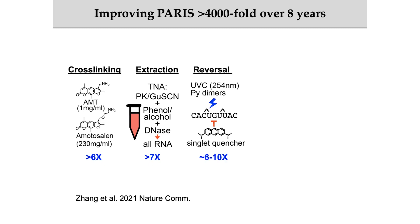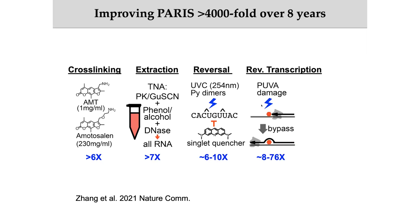During the reverse cross-linking steps, we know that short wavelength UV will cause RNA damage. We found that using singlet-light scavengers can protect the RNA and give us around 10-fold improvement. In the final reverse transcription step, we also optimized the conditions and found that our new method can bypass this damage, giving around 100-fold improvement. Combining all the steps, our next-generation PARIS method achieves more than 4,000-fold increase and enables us to capture the interactions between snoRNAs and their target RNAs.